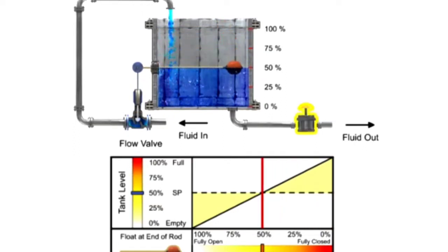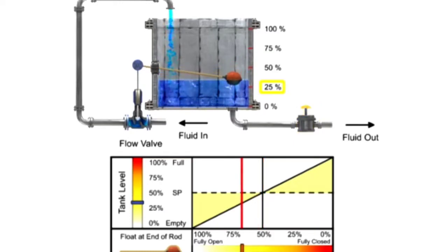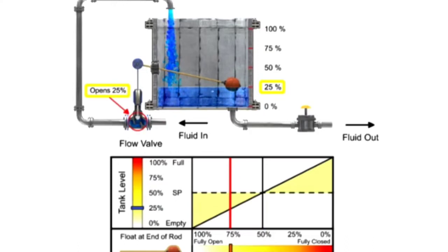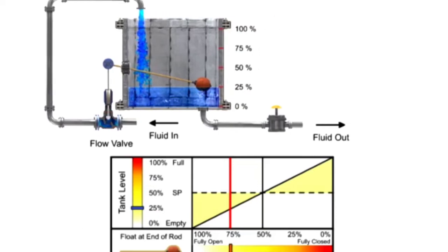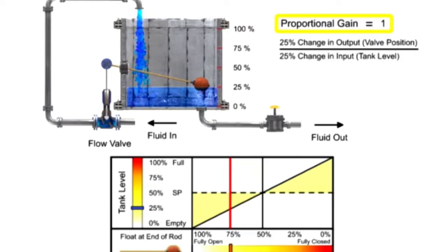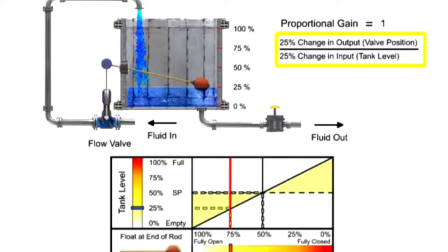Opening the drain valve increases the load demand, which causes the tank level to drop by 25%. The float drops and the valve opens 25%, which allows more fluid flow to enter the tank. A gain of 1 is demonstrated in this mechanism since the 25% change of input, or tank level, results in a 25% change of output, or valve position.